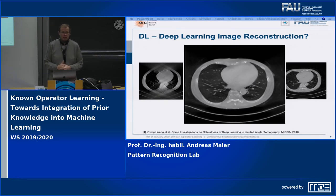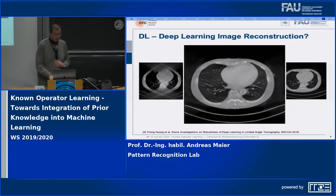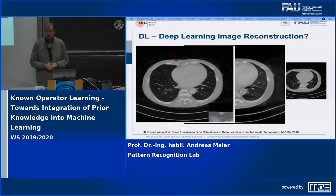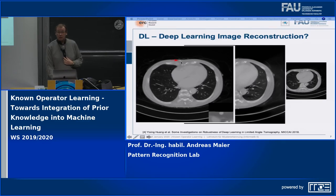We started thinking about this and said: this kind of looks too good — it somehow seems to solve all of the problems that we couldn't tackle for a long time. So we decided, let's make it a little harder. Let's hide something in this volume that the algorithm has never seen during training. What we did was hide a lesion very close to the chest wall — exactly the region where we were missing a lot of data, where we hadn't observed the boundary. There's a lot of artifact here.